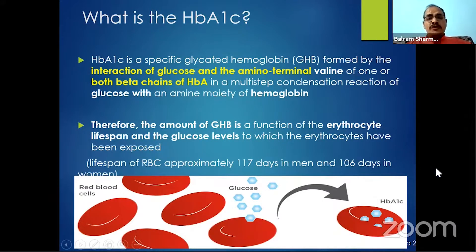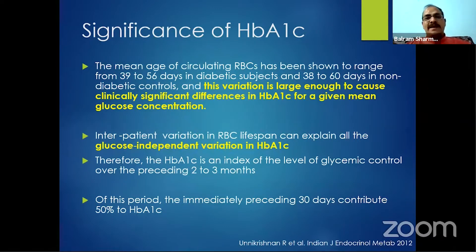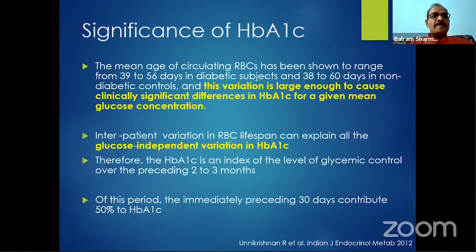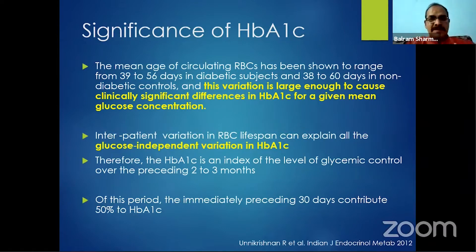The lifespan of RBCs is nearly 117 days in men and 106 days in women, but the mean circulating RBC lifespan is different. In diabetic patients it ranges from 39 to 56 days, while in non-diabetics it is 38 to 60 days. This variation is large enough to cause clinically significant differences in HbA1C for any given glucose level, independent of glucose itself — an inherent problem with HbA1C.